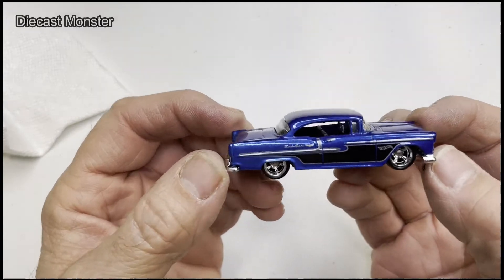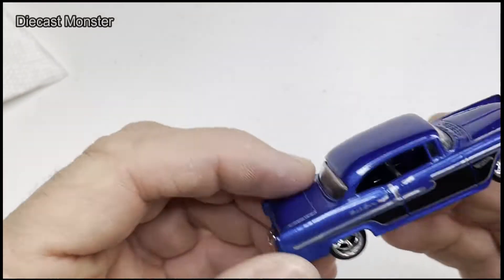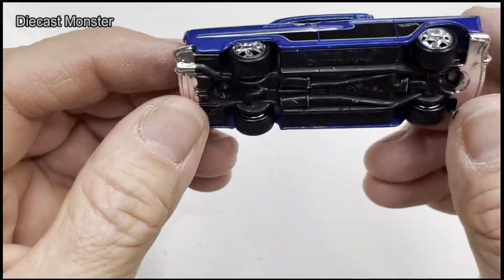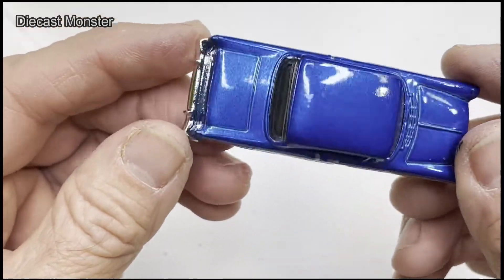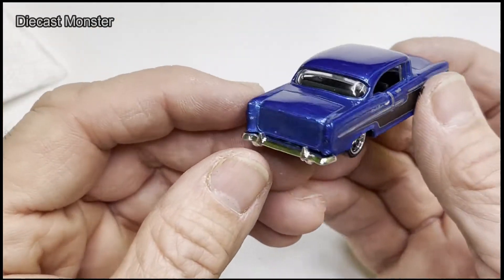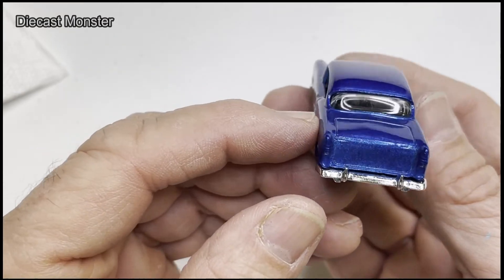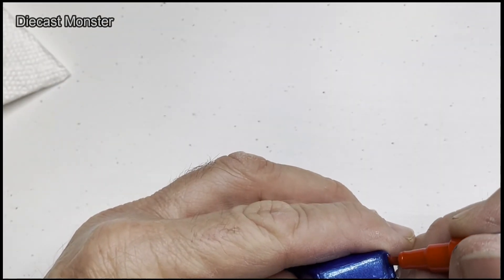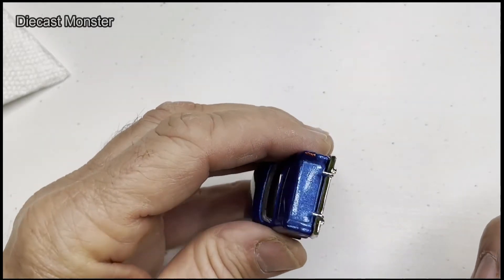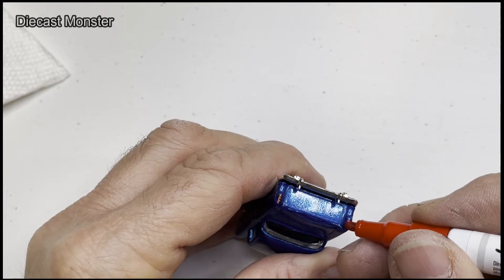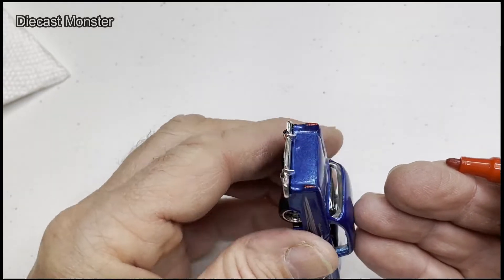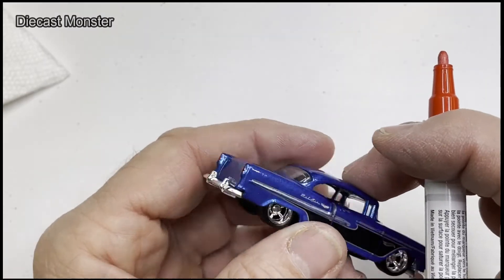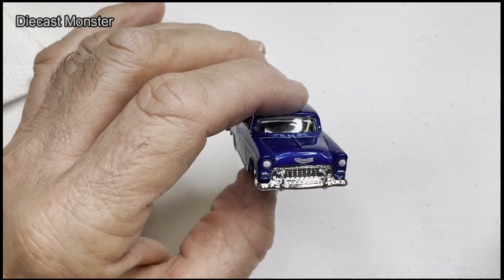There it is. Nice deep dish in the wheels, black interiors, I got the chrome bumpers, black underneath. I think I'm going to put the lights in the back, the red lights.